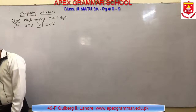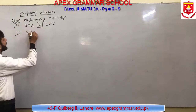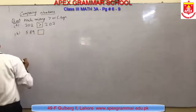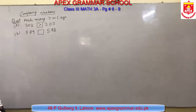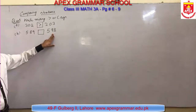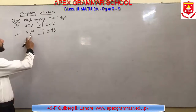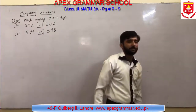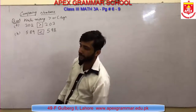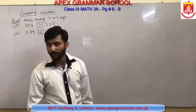Part B is 589, empty box, 598. As I said earlier, we have to choose the sign with reference to our first number. The first number is 589 and the second number is 598, so the first number is less and the second number is greater. We can say 589 is less than 598. Always keep in mind: if the first number is greater, place the greater sign; if the first number is less, place the less sign.